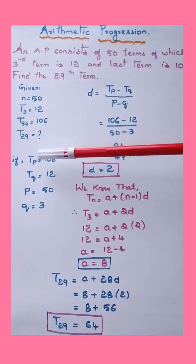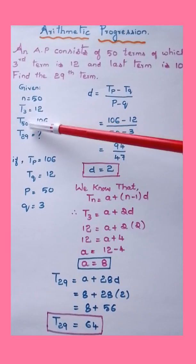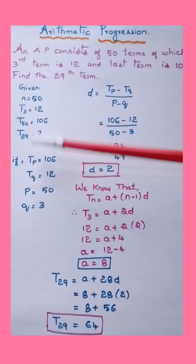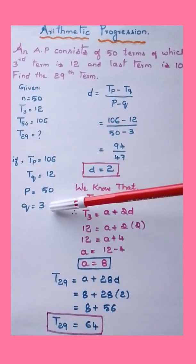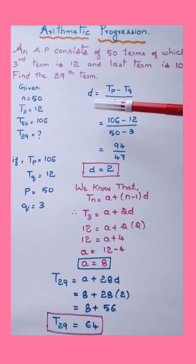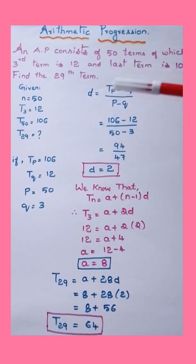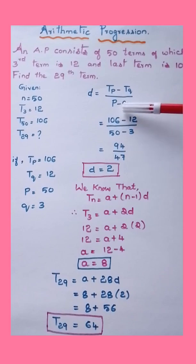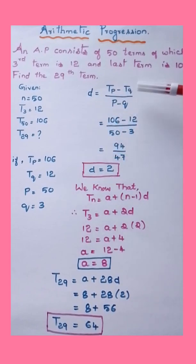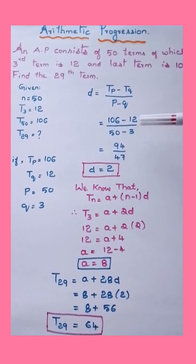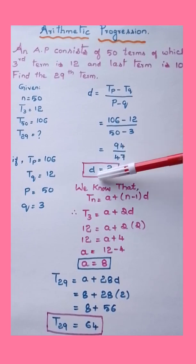Consider Tp = 106, so p = 50, and Tq = 12, so q = 3. Using the formula for common difference: d = (Tp − Tq) / (p − q). Substituting: d = (106 − 12) / (50 − 3) = 94 / 47 = 2. Hence d = 2.